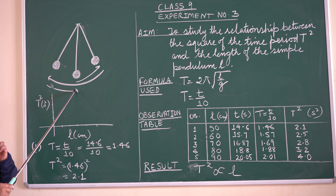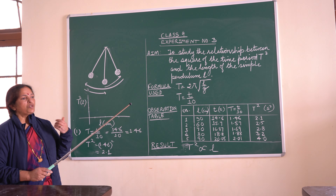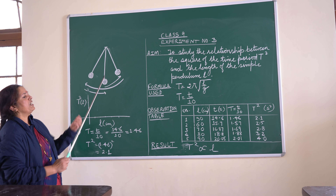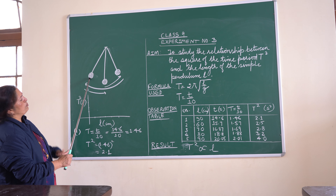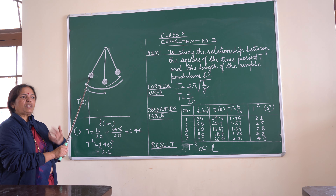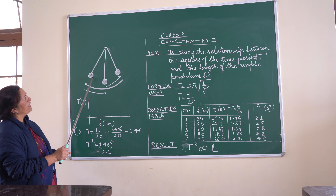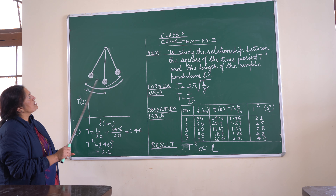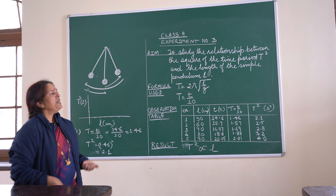This will be counted as one oscillation, because it is difficult for students to count from the middle — they can forget whether to count from the left or right hand side. So we take one extreme point while taking readings. Choose one corner and take the movement of the pendulum going out and coming back as one oscillation, then moving again as the second oscillation, and so on.